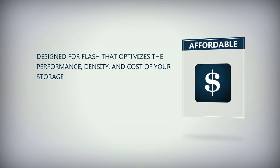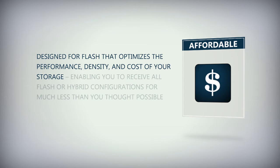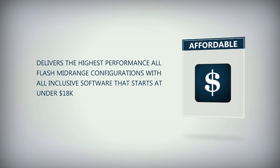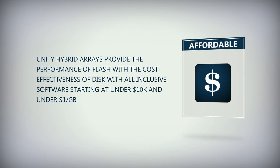Unity is affordable. Unity is designed for flash that optimizes the performance, density, and cost of your storage, enabling you to receive all-flash or hybrid configurations for much less than you thought possible. It delivers the highest-performance all-flash mid-range configurations with all-inclusive software starting at under $18,000, while Unity Hybrid arrays provide the performance of flash with the cost-effectiveness of disk, with all-inclusive software starting at under $10,000 and under $1 per gigabyte.